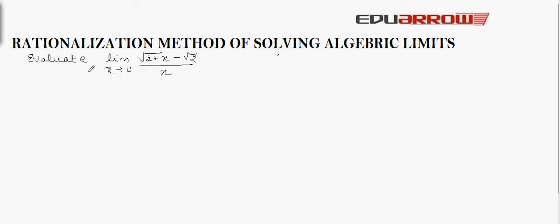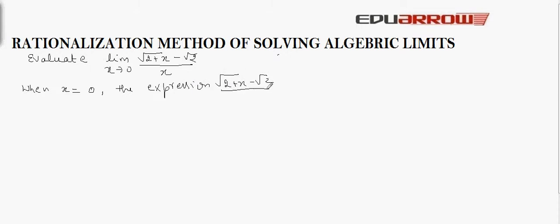For example, we have to evaluate this function at the limit x tends to 0. When x is equal to 0, the expression (√(2+x) − √2) / x takes the form 0/0. As we can see, if x is 0 in the denominator we get 0, and in the numerator √2 is cancelled out by 2, so the form becomes 0/0.